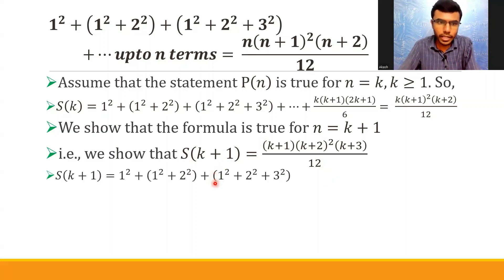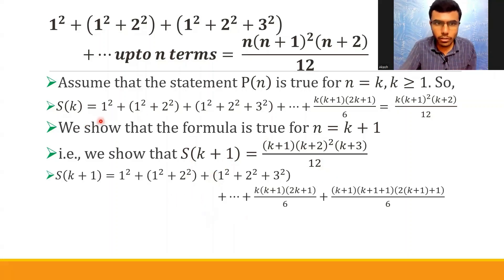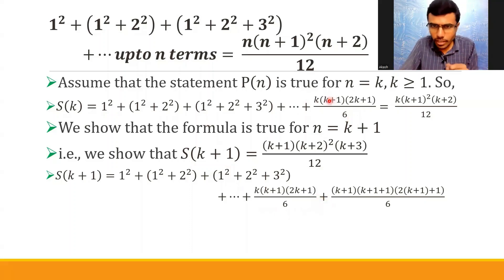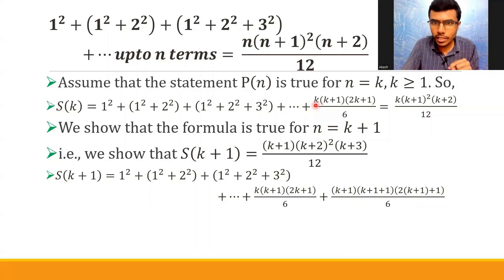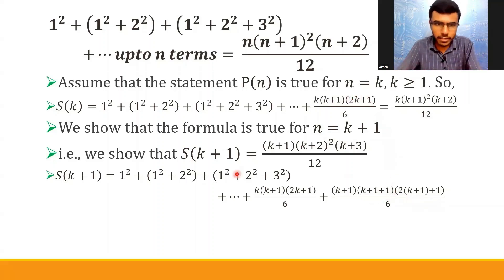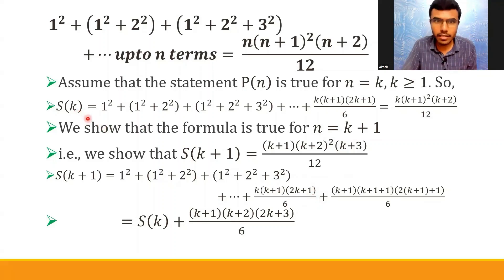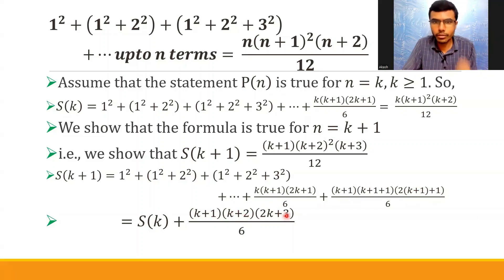By definition, S(k+1) = S(k) + the (k+1)-th term. S(k) is 1² + 2² + ... + k², so S(k+1) adds the (k+1)-th term. To find the (k+1)-th term, put k+1 in place of k: that gives (k+1)(k+2)/6 × ... specifically (k+1)(k+1+1)(2(k+1)+1)/6 = (k+1)(k+2)(2k+3)/6. So S(k+1) = S(k) + (k+1)(k+2)(2k+3)/6.